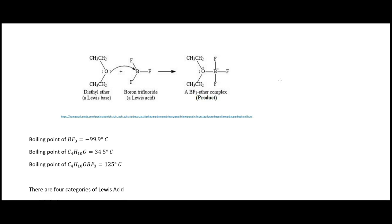Another common example is diethyl ether as the Lewis base — it has a lone pair of electrons (nucleophile) — reacting with boron trifluoride BF3 as the Lewis acid to form a complex, also called an adduct. Notably, BF3 has a very low boiling point and diethyl ether boils below 100°C, but when they form the adduct the boiling point rises significantly to 125 degrees Celsius, above the boiling point of water.